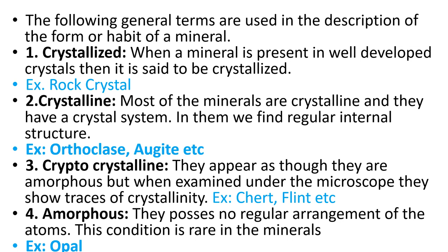General terminology used in describing form or habit: 'Crystallized' means a mineral is present in well-developed crystals — example, rock crystal (a variety of quartz). 'Crystalline' means most minerals are crystalline and have a crystal system with a regular internal structure — example, orthoclase, agate. 'Cryptocrystalline' means they appear amorphous but when examined under the microscope show traces of crystallinity — examples include chert and flint.